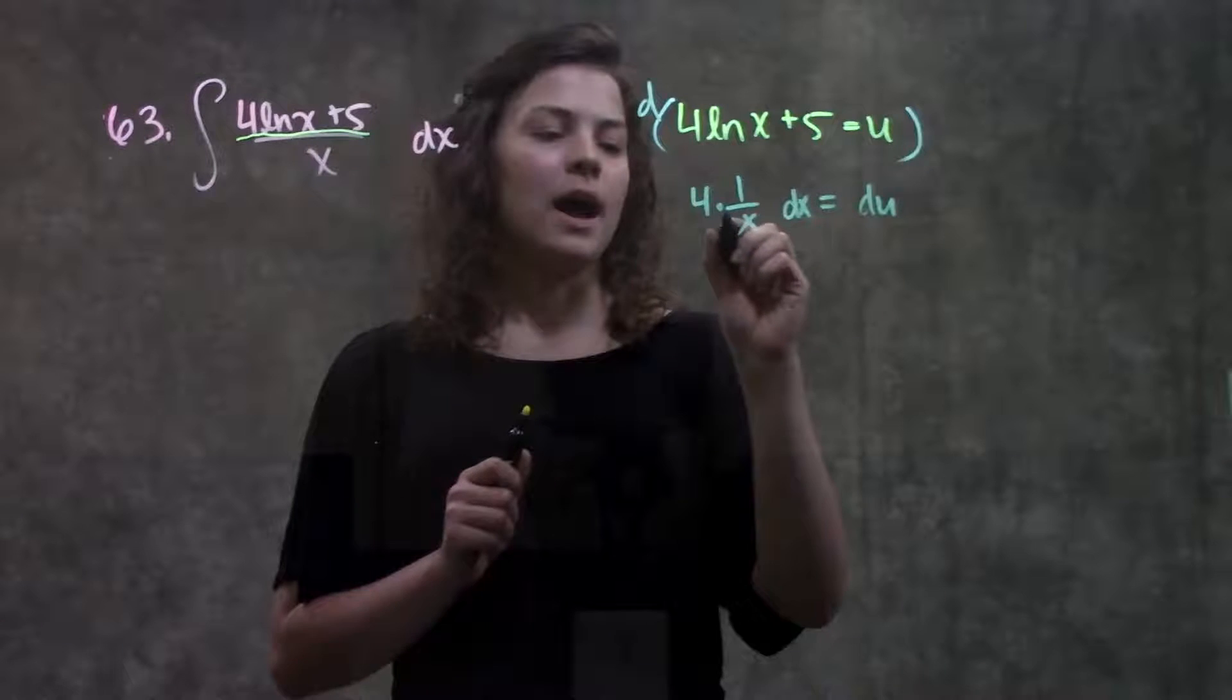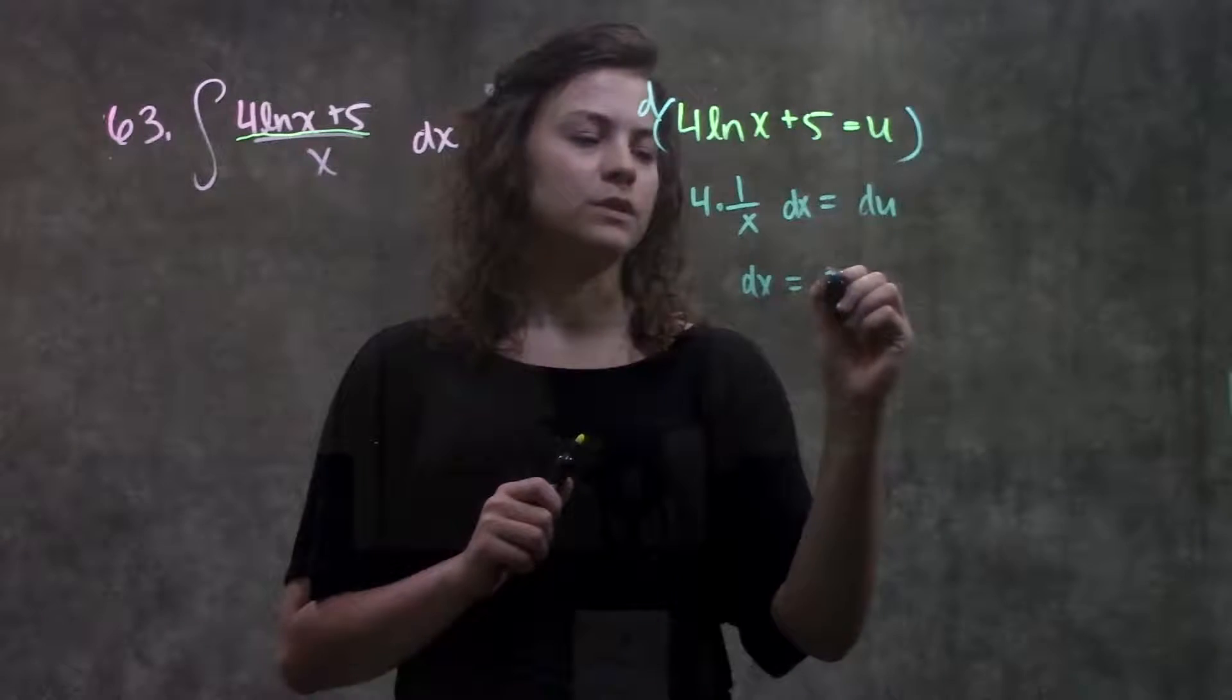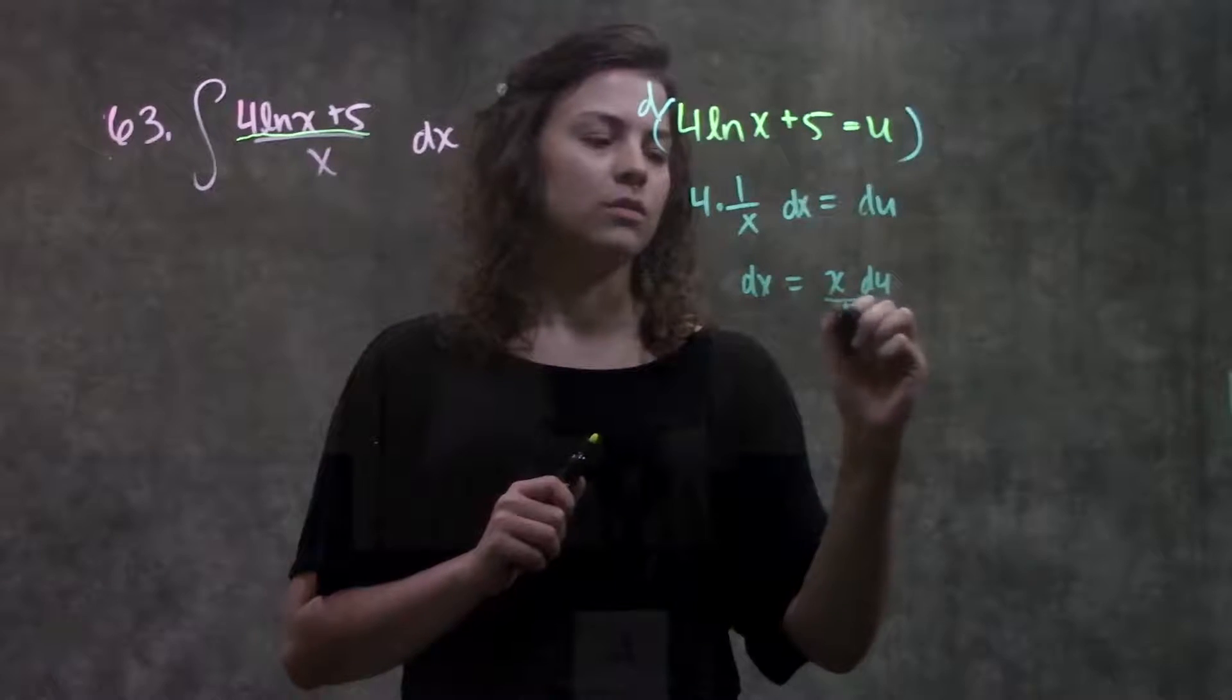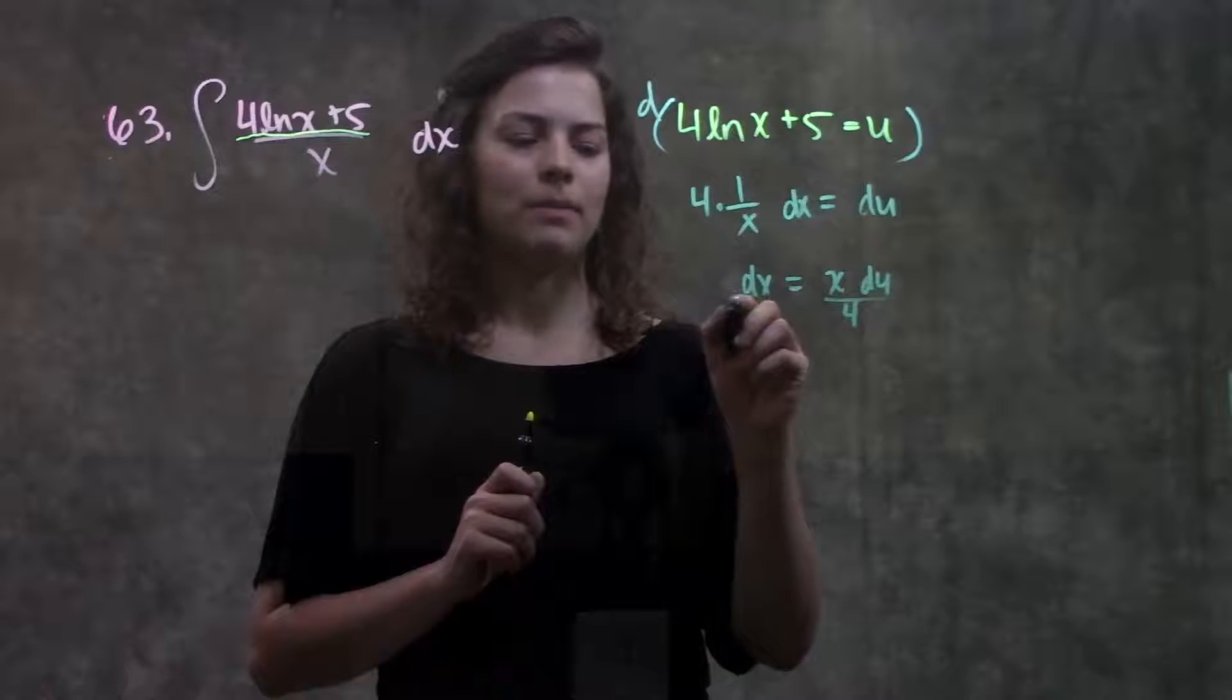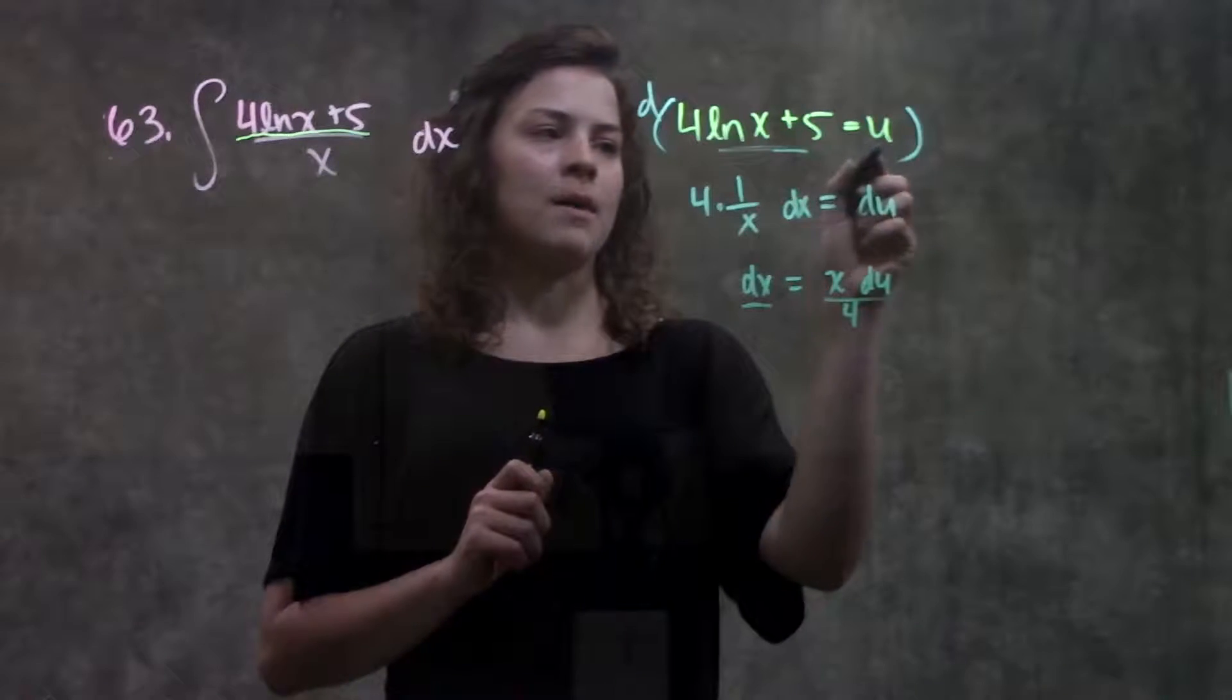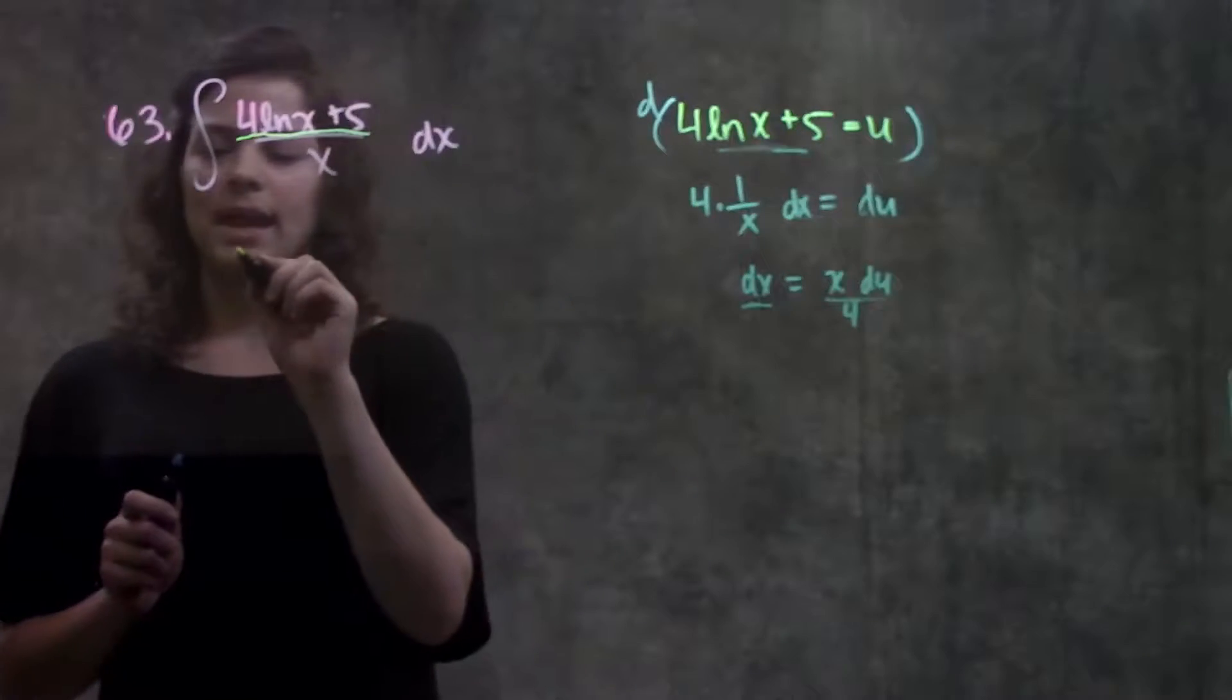Solving for my dx, I'll have to divide this over to the other side, so I get dx is equal to x du over 4. Okay, so let's go ahead and plug in our dx and plug in this part of the function back into my original function and see what I get.